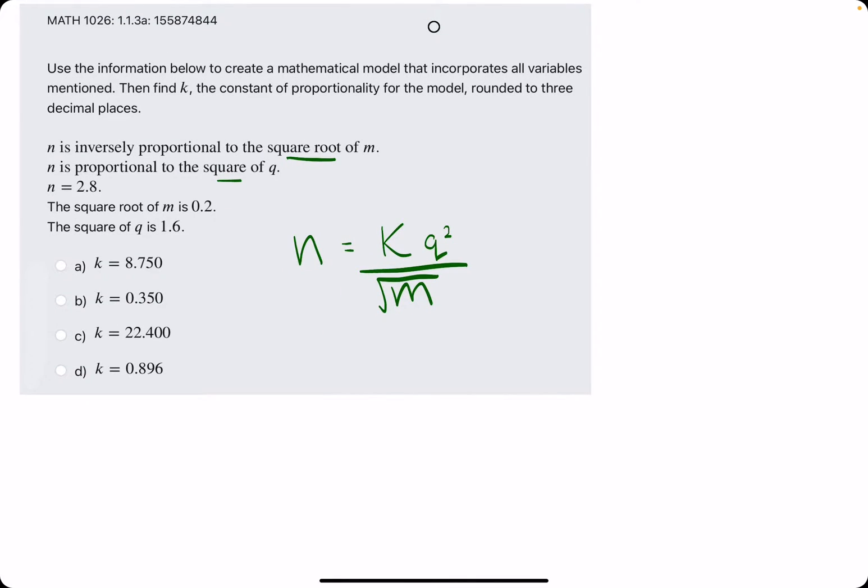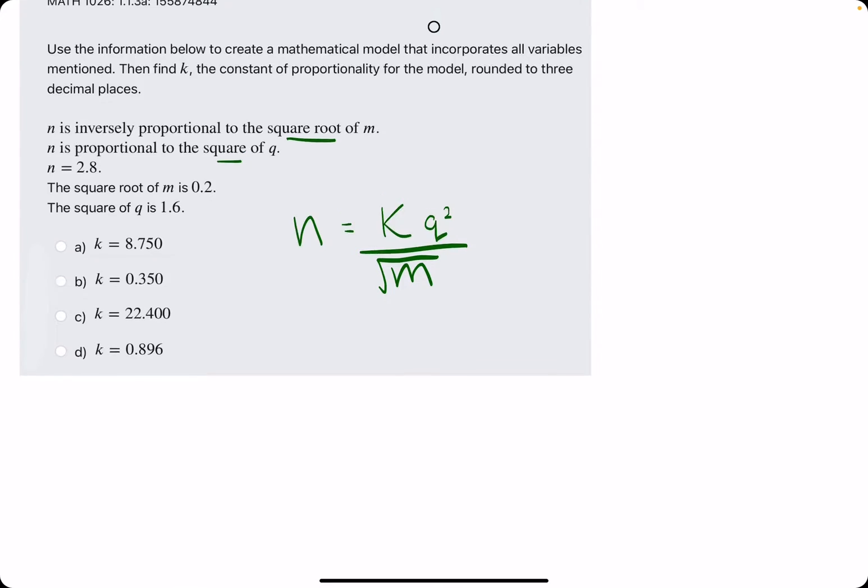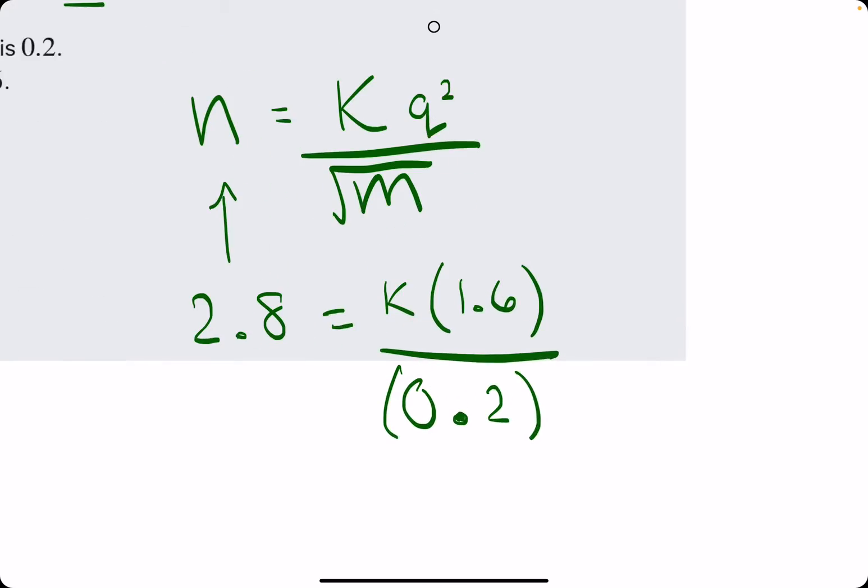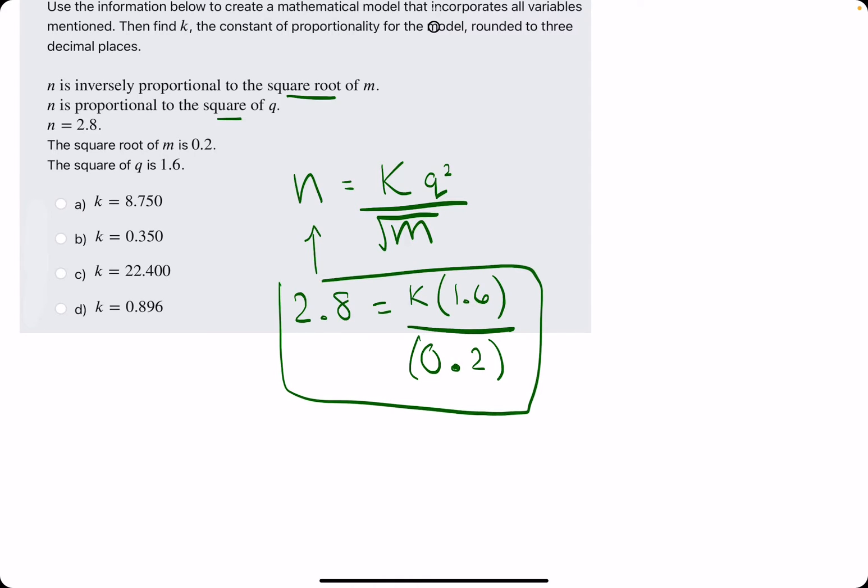Alright, so then they give us some values for n, square root of m, and square of q. So we will plug in 2.8 for n, leave k as it is, q squared, or the square of q is 1.6, and then the square root of m is 0.2. So we just substitute all these values in place of all of these values up here.